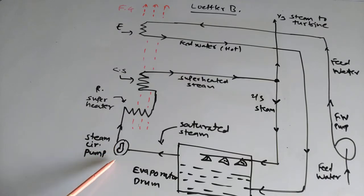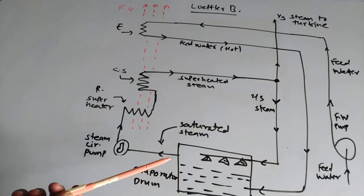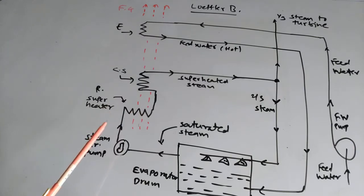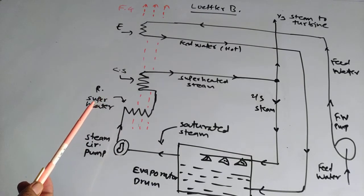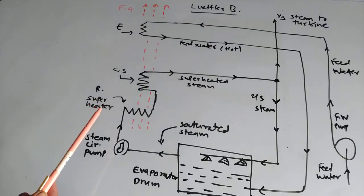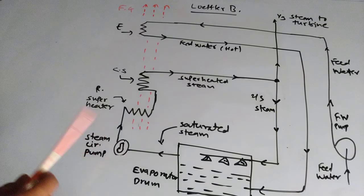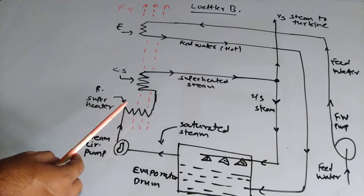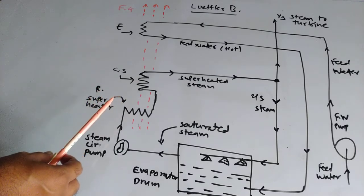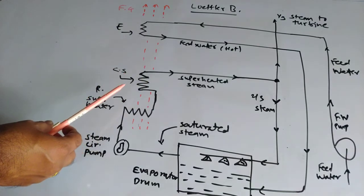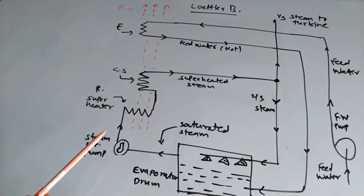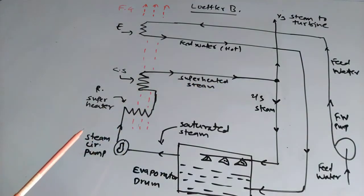With the help of the steam circulating pump, the saturated steam is circulated towards the combustion chamber — specifically towards the radiant superheater. There are two superheaters: the radiant superheater and the convection superheater. Both superheaters receive heat from the combustion chamber and flue gases. In the radiant superheater, the steam is heated by means of flame radiation, and then it is sent to the convection superheater, where it is heated by hot flue gases. The steam then becomes superheated and is sent towards the turbine.